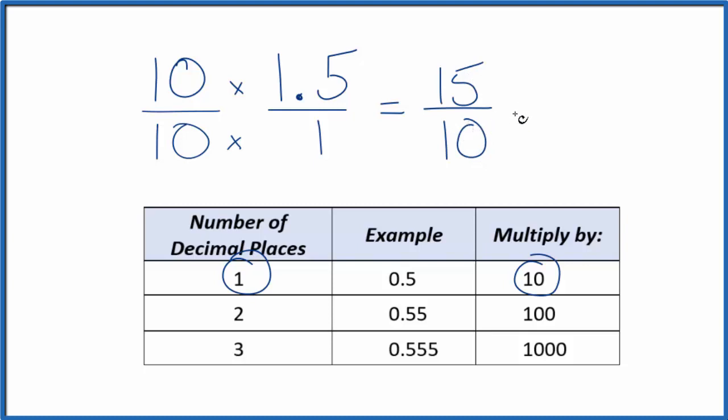We could simplify this. 5 goes into 15 3 times, and it goes into 10 2 times. So now we have an improper fraction.